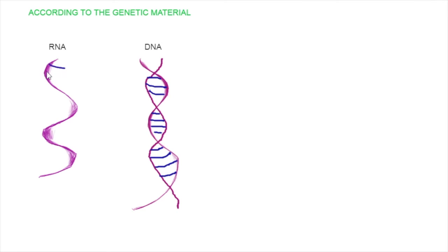According to their genetic material, we have two options. Either they have DNA that we have already seen, and it's formed of two branches, or they have a simpler version called RNA that is only one of the branches.